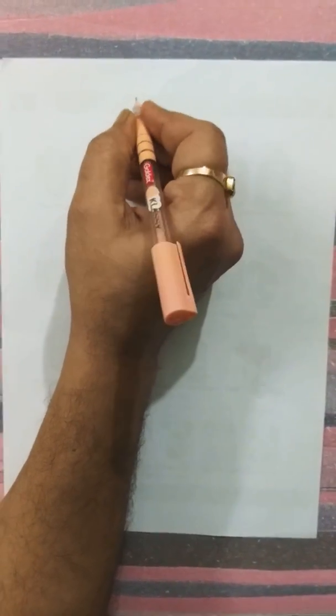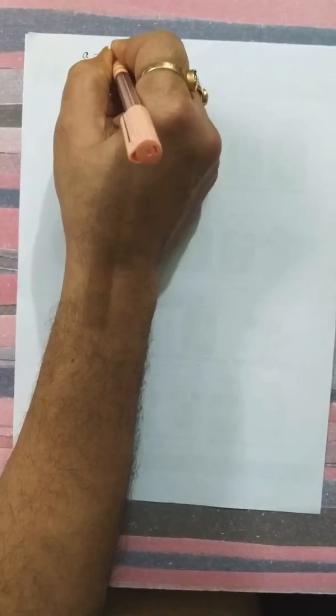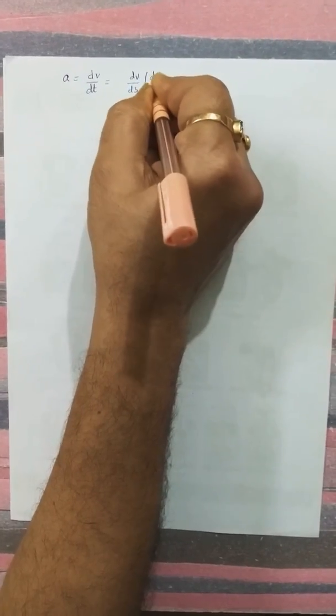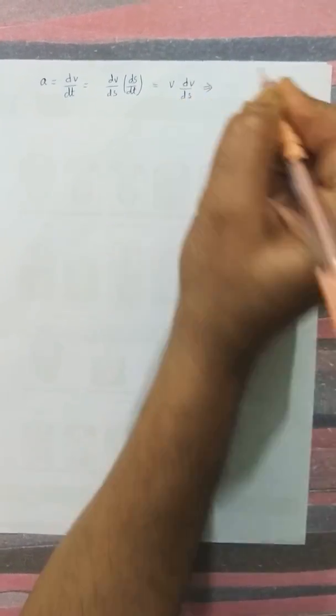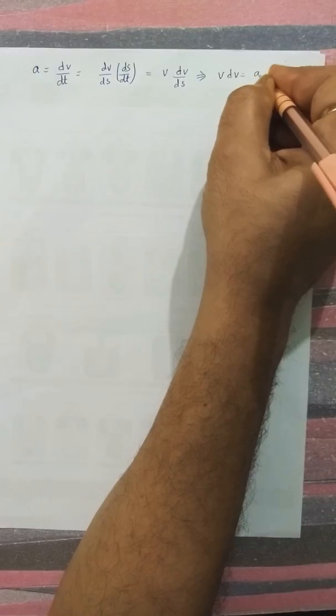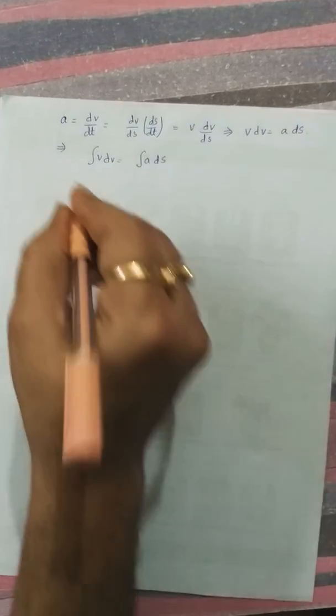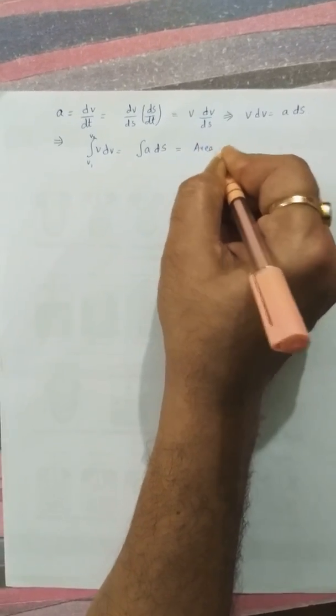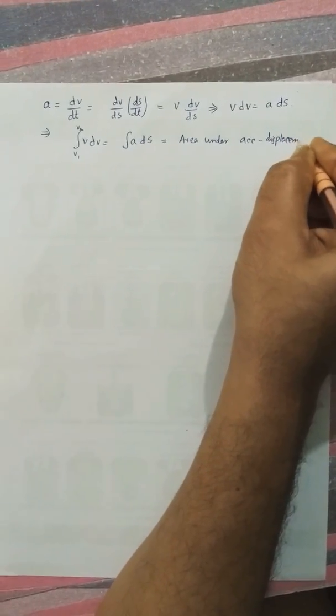Let us study acceleration versus displacement graph. Acceleration equals dV by dt, which can also be written as dV by dS times dS by dt, meaning V times dV by dS. This implies V dV equals A dS. Integrating both sides, V dV equals integration of A dS. If velocity goes from V1 to V2, this indicates the area under acceleration versus displacement graph.